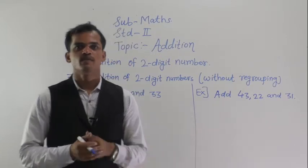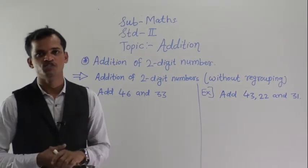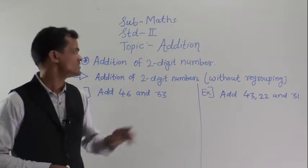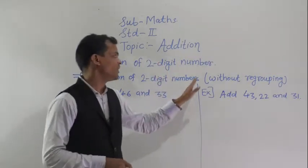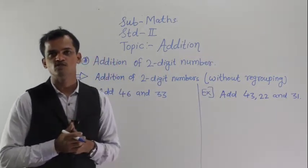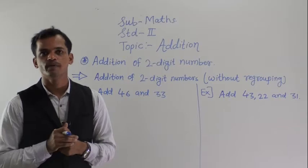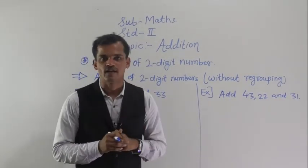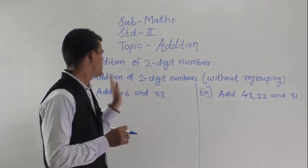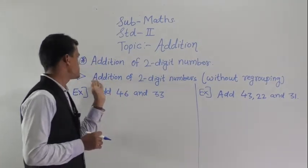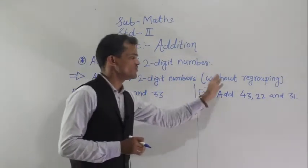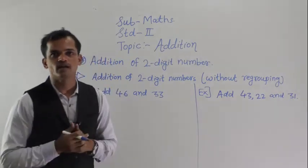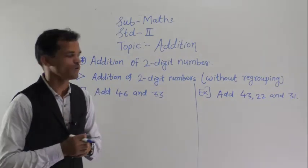Now we will see how to add 2-digit numbers. There are 2 cases. The first one is without regrouping, which means without carry forward. This is addition of 2-digit numbers without regrouping, or simply without carry over.